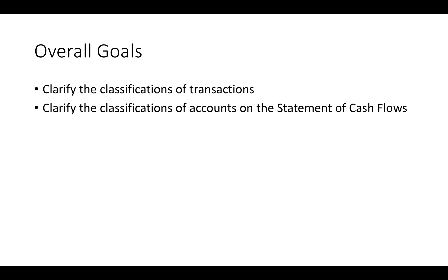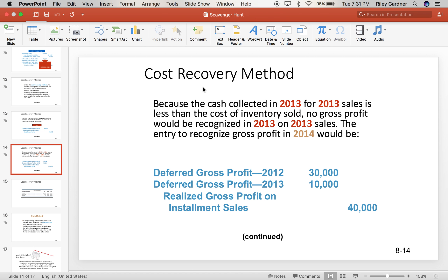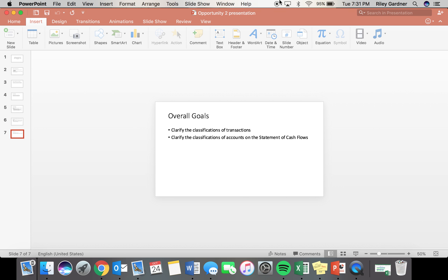The overall goals of Statement Number 95 dealing with cash flows: it was to help clarify the classifications of transactions, thus eliminating the restricted cash and restricted cash equivalents, and also to clarify the classification of accounts on the Statement of Cash Flows, thus eliminating the indirect method reconciliation that was attached at the bottom of the direct method. I hope this was helpful today and that you learned something out of this.